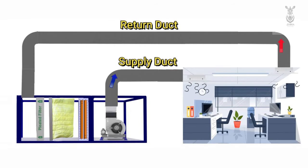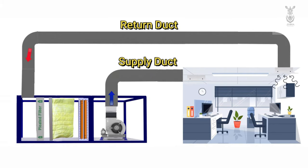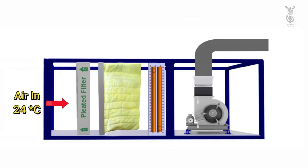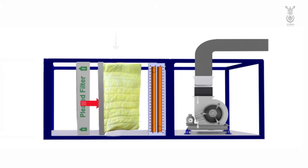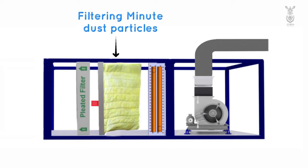The working principle of the AHU: The blower motor in the AHU supplies air to the room through the supply duct. The hot air from the room returns to the AHU through the return duct. The normal temperature of air is 24 degrees Celsius while entering the AHU. It travels through the filter first, where the large dust particles in the air are filtered. Then the air travels through the bag filter, where minute dust particles are filtered.